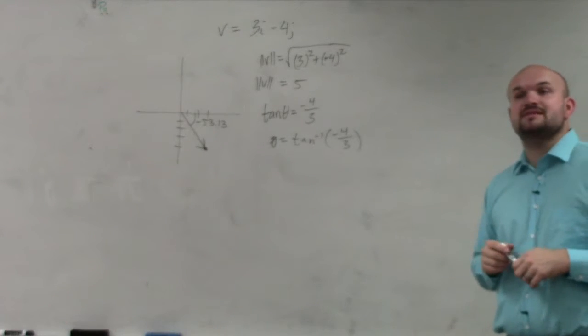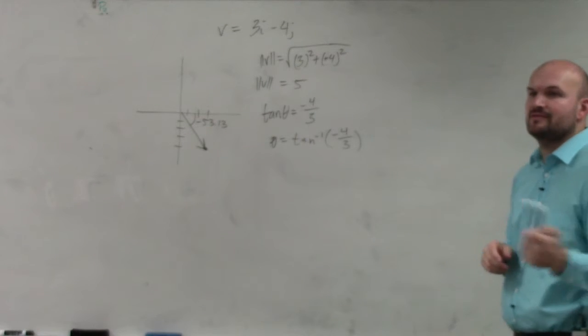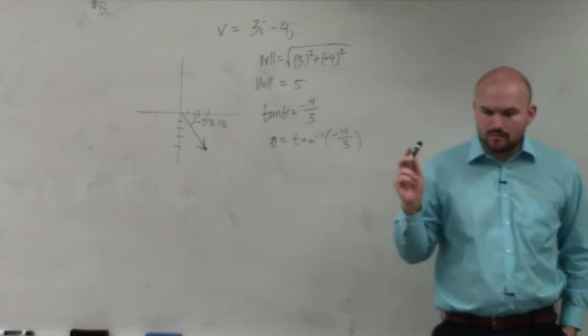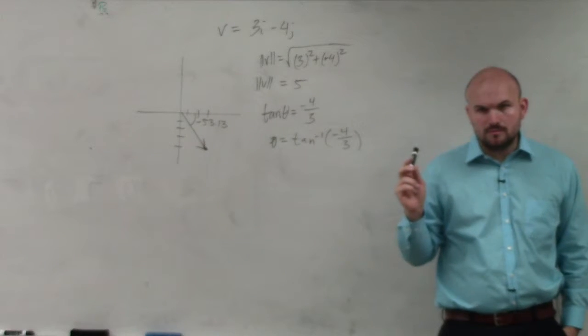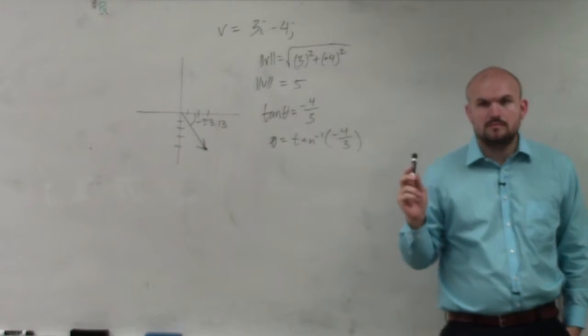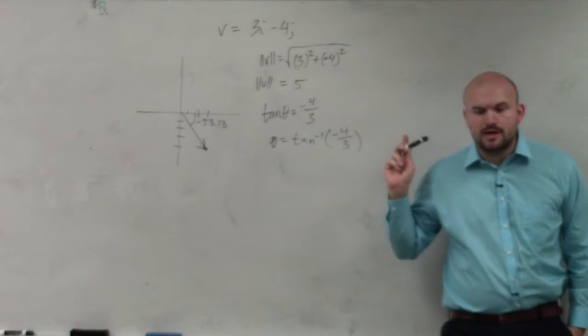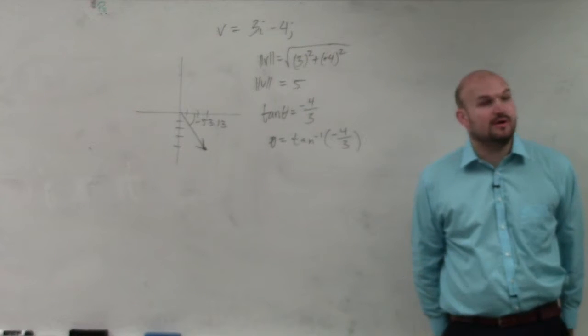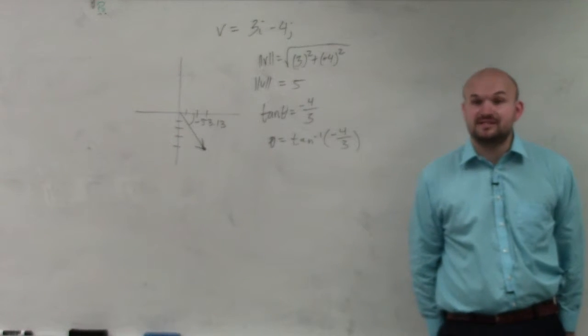So 16 plus 9 is 25, square root of 25 is 5. So the one thing when we're talking about the angles of vectors is we're going to want to compute the angle of the vector in the positive format.